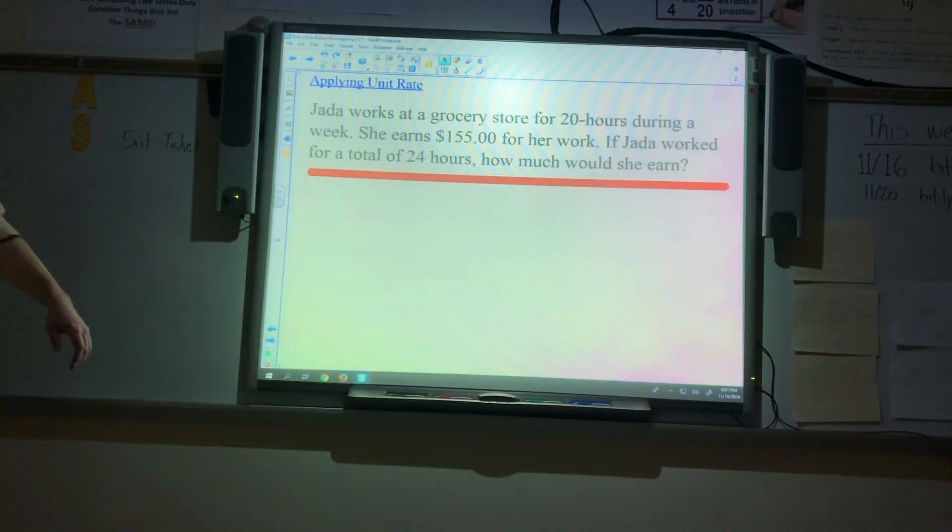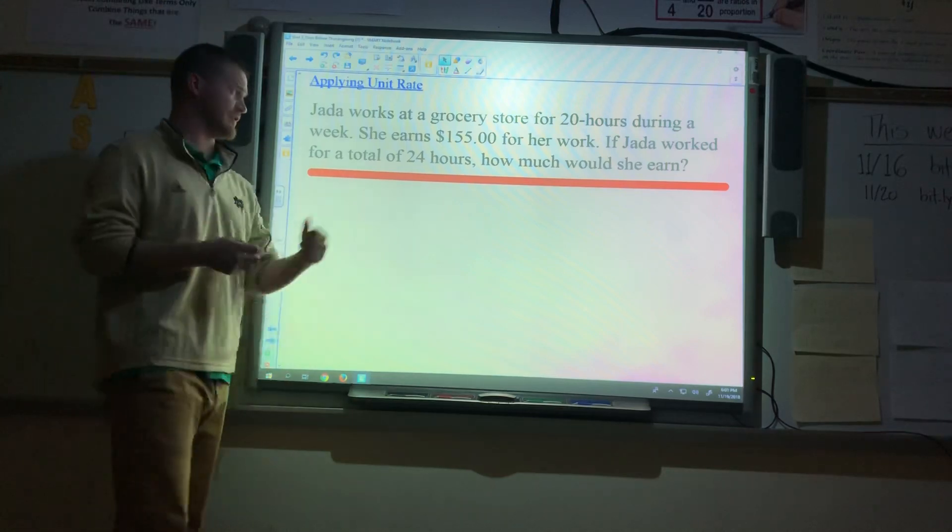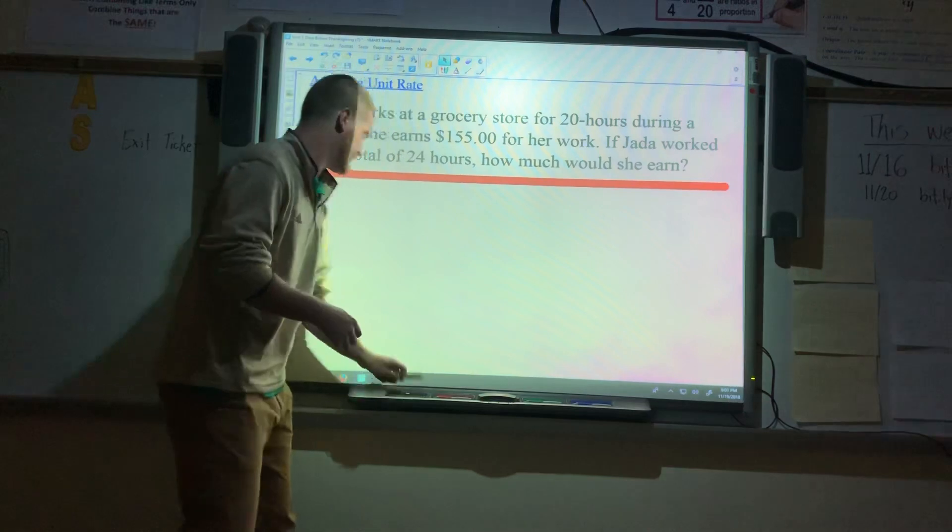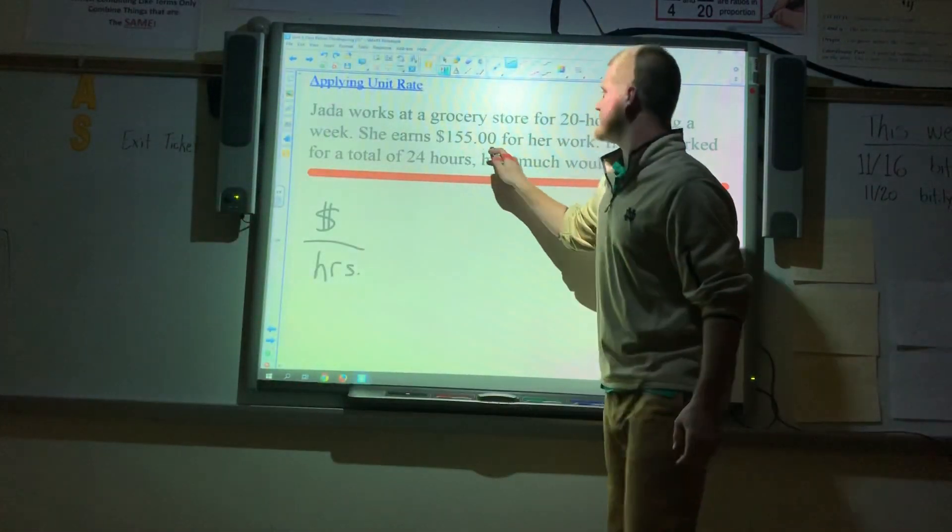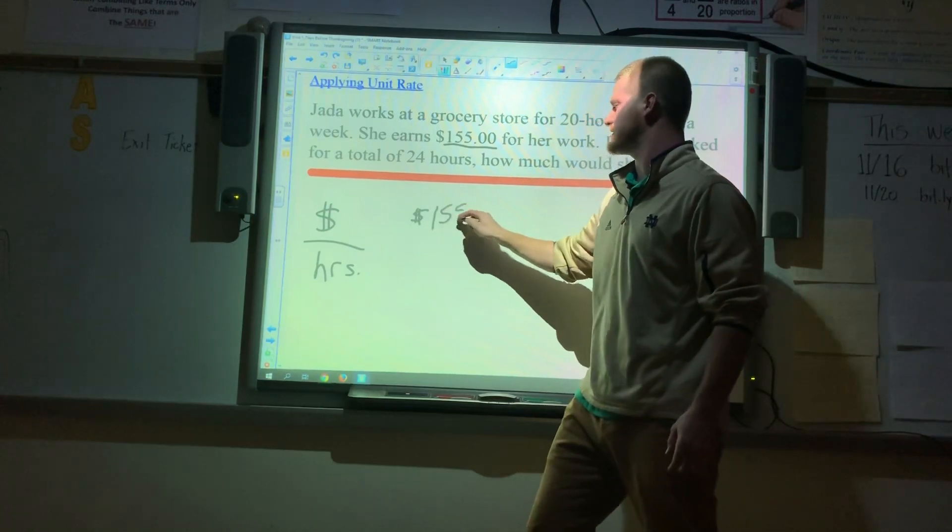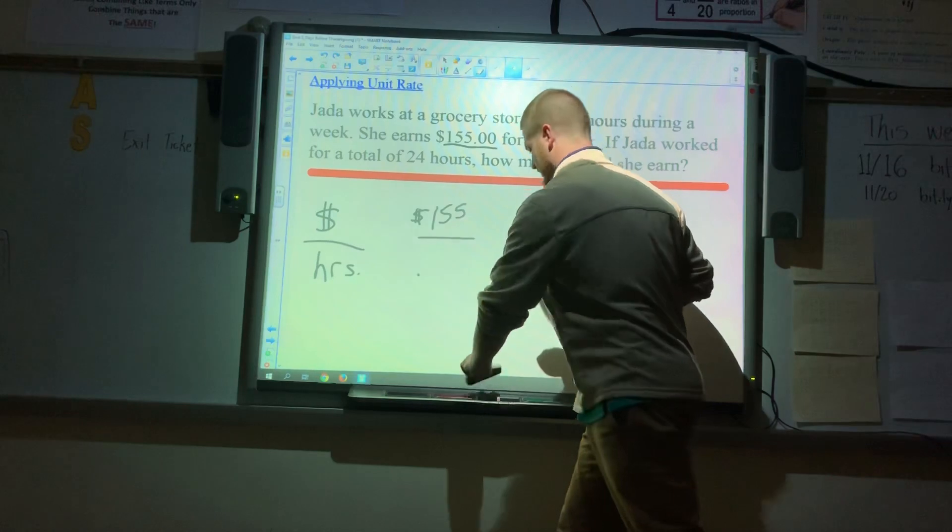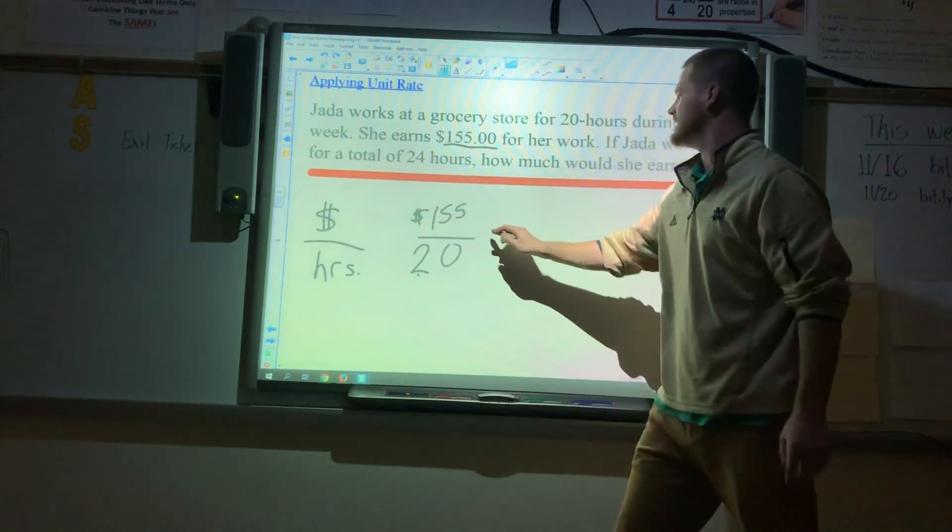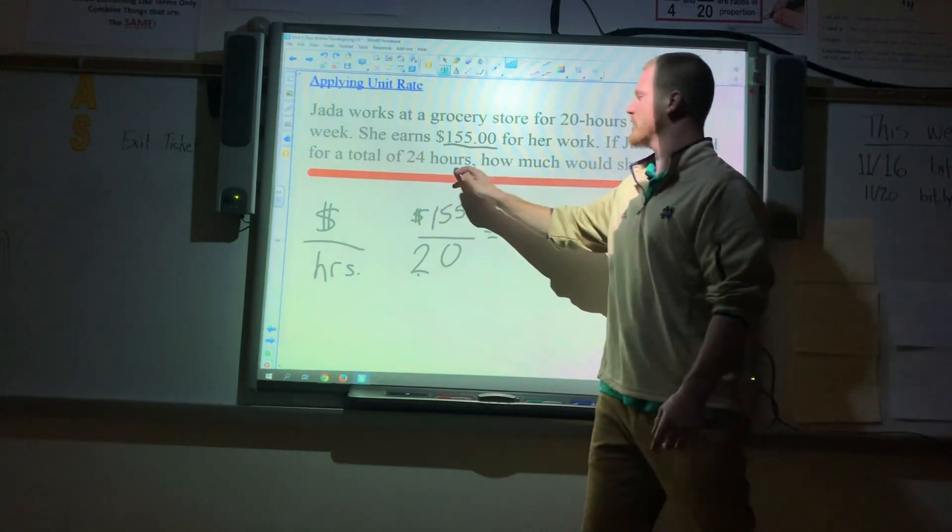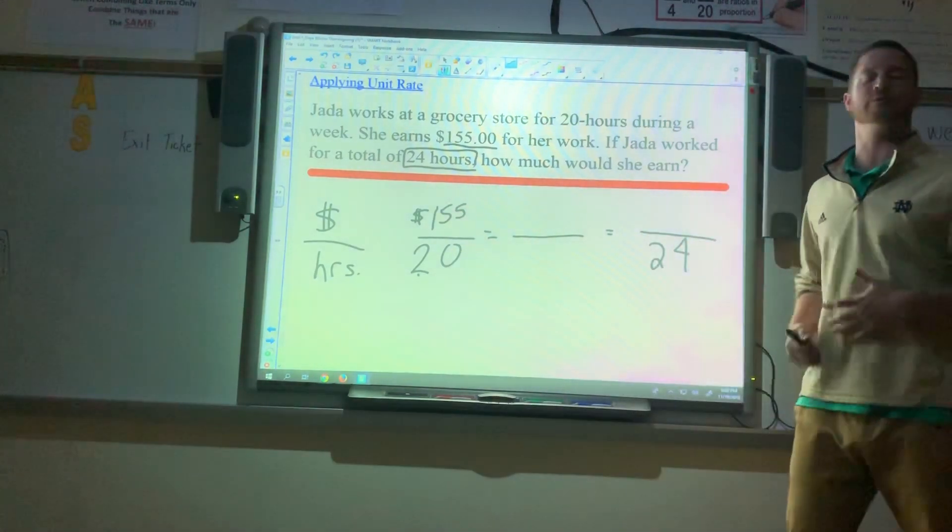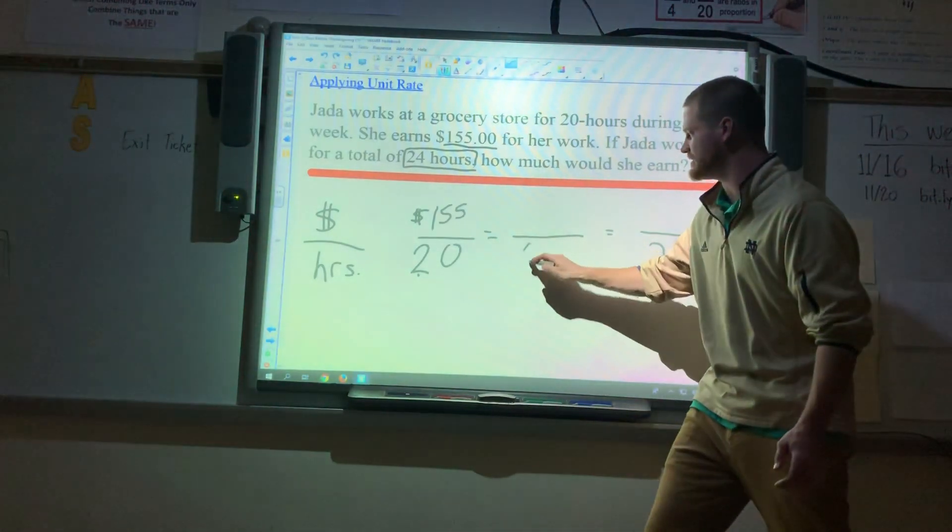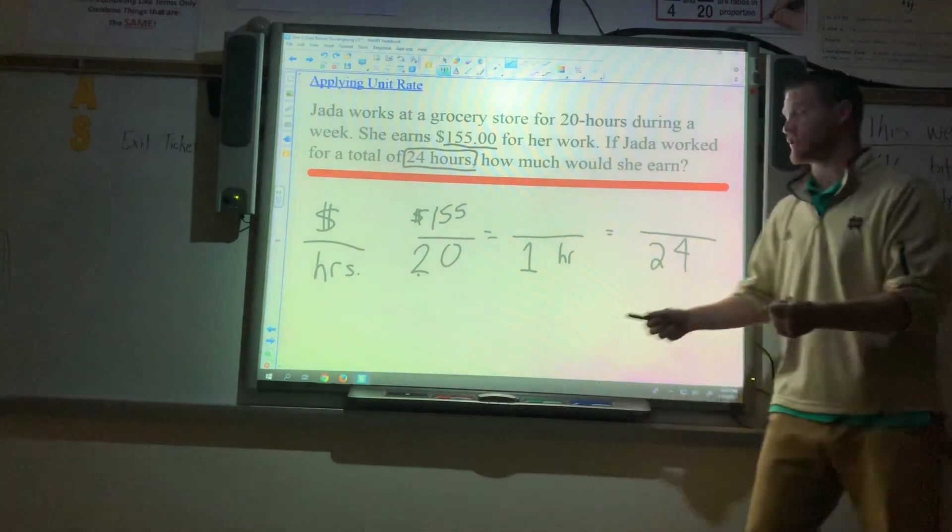Moving on. I believe you had this in your notes and you're missing the $155. So, Jane's working at a grocery store for 20 hours during the week. She earns $155 for that work. If she worked a total of 24 hours, how much would she earn? Well, I know I'm comparing money to hours. So first, I'm going to set up my ticket. We have money over hours. I'm going to go ahead and give me my rate. We have $155 going on top. We have $155. She earns that much for working 20 hours. 20 hours. But eventually, we're looking for how much she would make in 24 hours. Now, a basic ratio problem, I would say 20 times what is 24. But we all know that 20 doesn't go to 24 evenly. So, I've got to find this unit rate first.